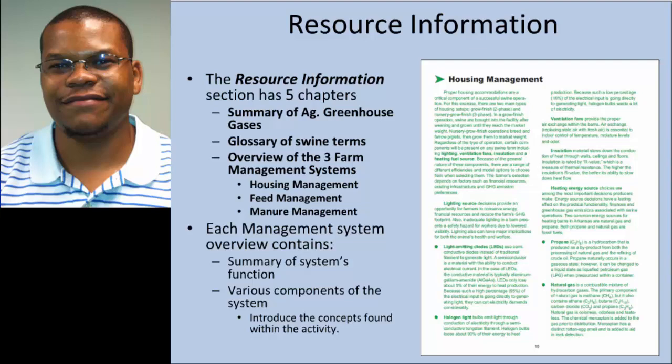Each management system is designated a section which contains a summary of that system. That summary discusses the system's purpose and role in the larger system, as well as listing common components that make up that given system. For example, the housing management system includes things such as lighting sources, heating energy source, and barn insulation material. The resource information is purposed to introduce concepts found within this activity, and the exercise then reinforces that information.